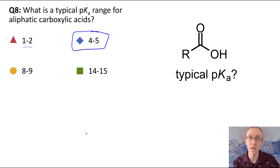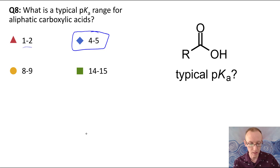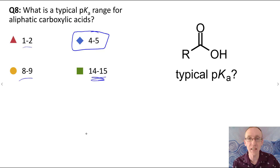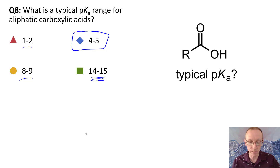If you remember acetic acid's pKa of 4.74, you'll have a good yardstick for remembering other carboxylic acids. Eight to nine and 14 to 15 are much weaker acids — 14 to 15 is getting down more towards the range of pKa values for alcohols. In fact, alcohols are more like 16.